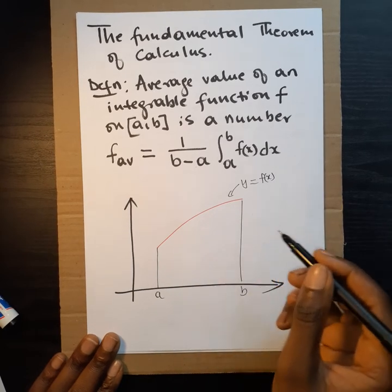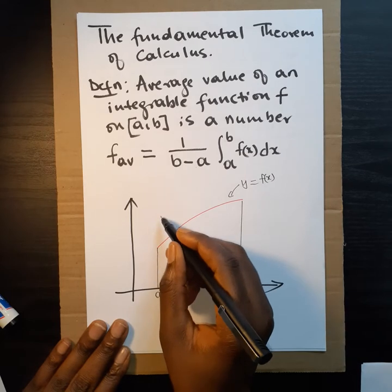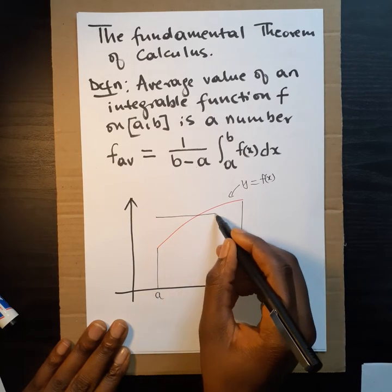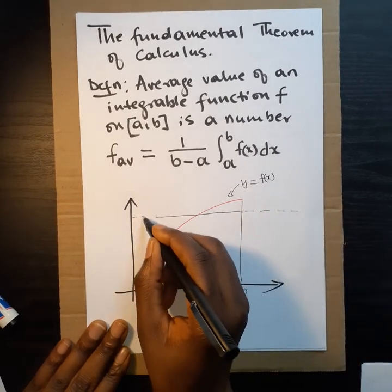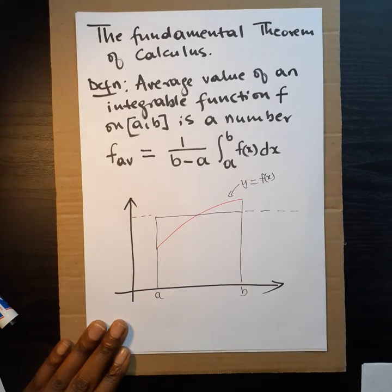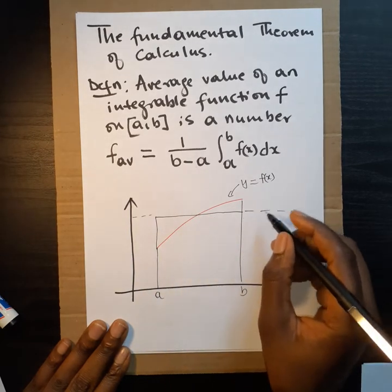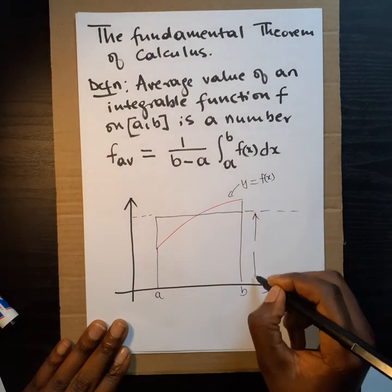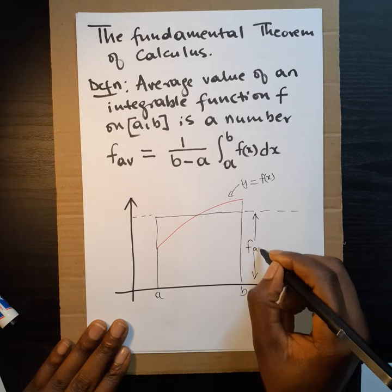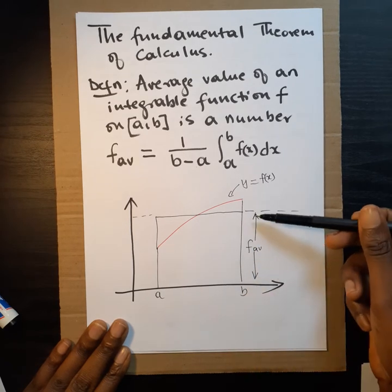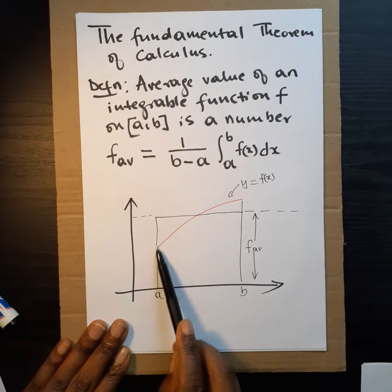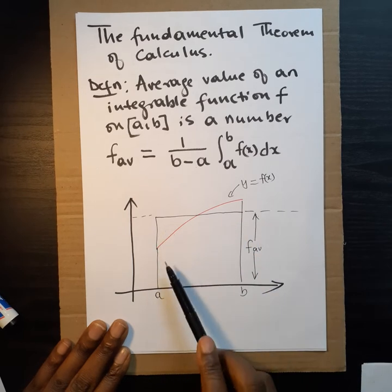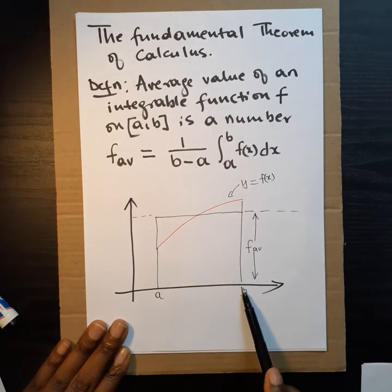In other words, if we draw a rectangle spanning the interval, can we find a number f_av such that when we multiply it by the length of our rectangle we get the area of the rectangle, and that area equals the area under the curve? I hope that makes sense.